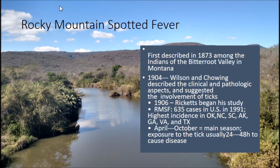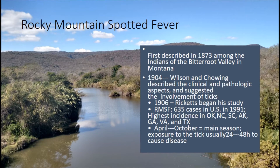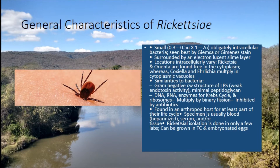To start this presentation, we're going to talk about Rocky Mountain Spotted Fever. It was first described in 1873 among the Indians of the Bitterroot Valley in Montana. In 1904, Wilson and Chowen described the clinical and pathological aspects and suggested the involvement of ticks as the vector. In 1906, Ricketts began his study, and in 1991, Rocky Mountain Spotted Fever produced 635 cases in the U.S. The main season for exposure to these ticks is from April to October.